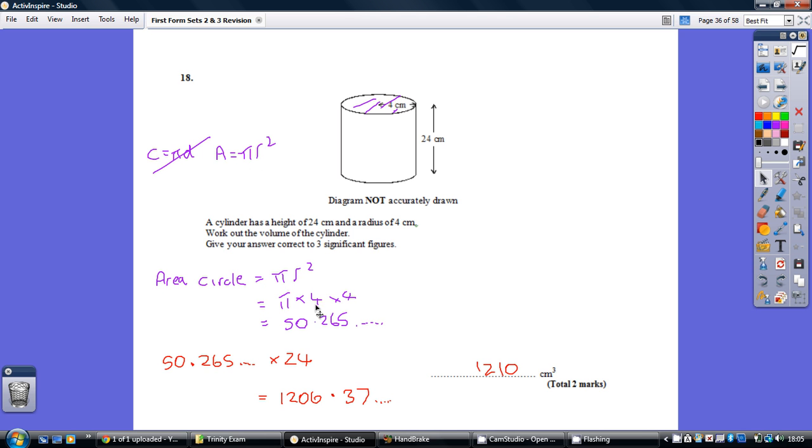Pi times the radius, which is 4, times 4 again. Now, putting that into a calculator, we get 50.265. So that's the area of the circle.